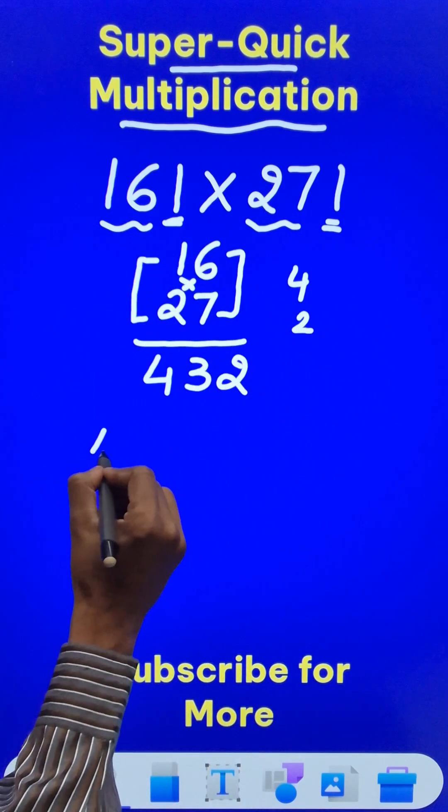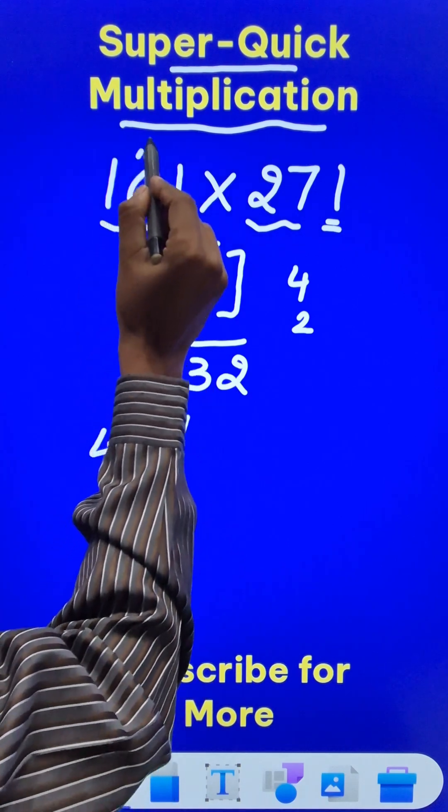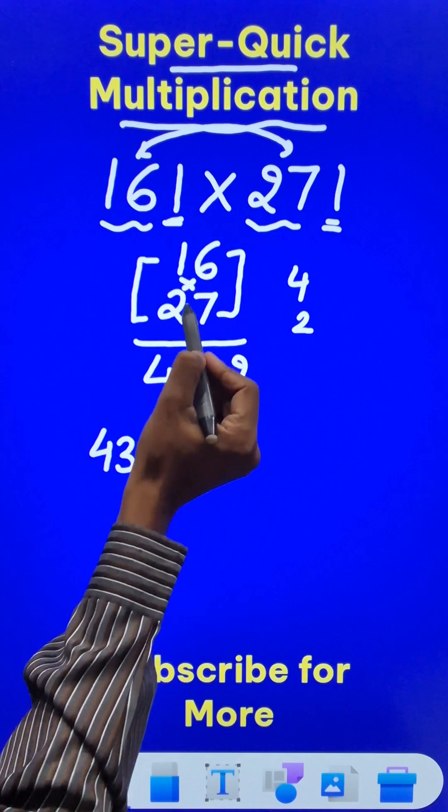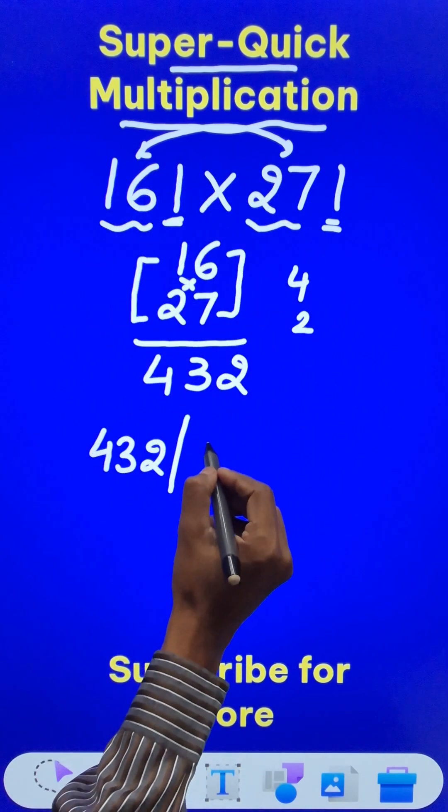So 432 becomes the first part of your answer. And then the middle part is when you add 16 and 27. First we multiplied them to get the first part. Now we are adding them. So 16 plus 27 is 43.